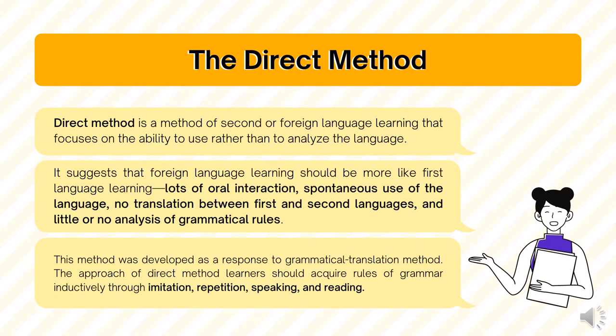The direct method is a method of second or foreign language learning that focuses on the ability to use, rather than to analyze, the language. It suggests that foreign language learning should be more like first language learning: lots of oral interaction, spontaneous use of the language, no translation between first and second languages, and little or no analysis of grammatical rules.